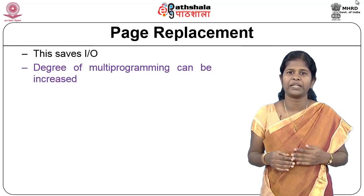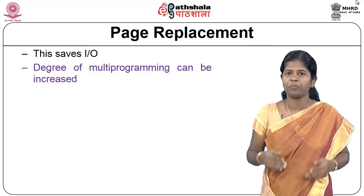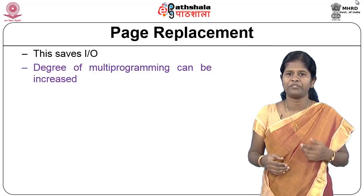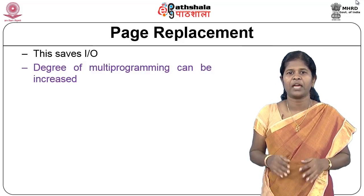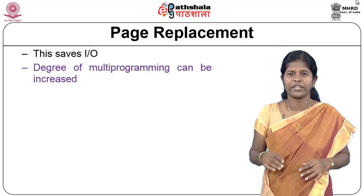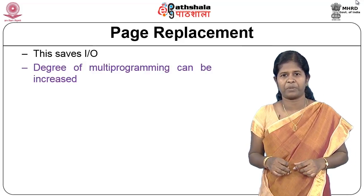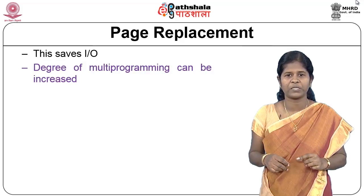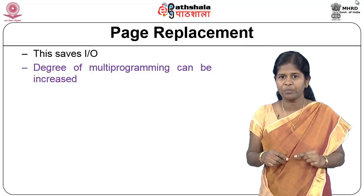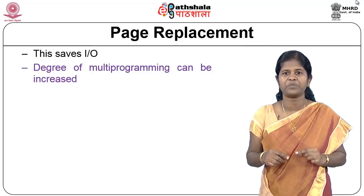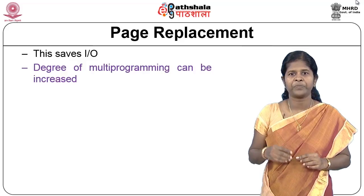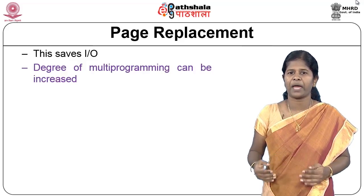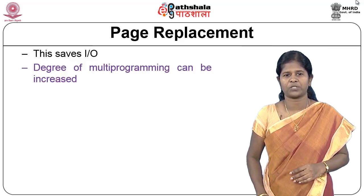The degree of multiprogramming refers to the number of processes that can be kept in physical memory at a particular time. Because one process occupies fewer physical frames, the remaining space can be utilized by other processes.